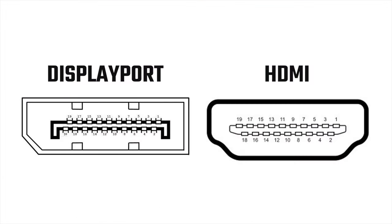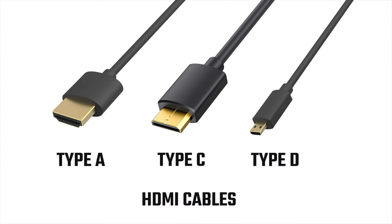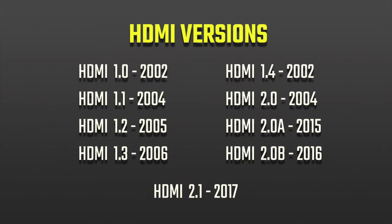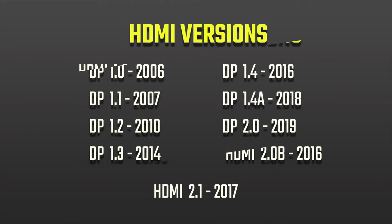The HDMI cable has a 19-pin connector while the DisplayPort comes with a 20-pin connector, and the ports and cables have different shapes so you cannot mix them up. The HDMI cable comes in three types: Type A, Type C, and Type D. The DisplayPort comes in two connector versions: a full-size connector and a mini connector. Here are all the other versions of the HDMI port and all the versions of the DisplayPort.